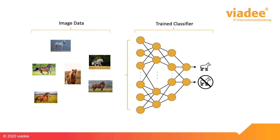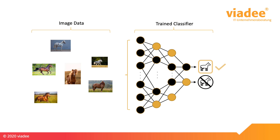To understand why we would need such a tool, imagine a machine learning classification model that was trained on image data, as shown in this slide. At the moment it doesn't really matter what type of model that is — say we have something like a neural network trained on image data about horses. That means for a given input image, the classifier can predict whether the image contains a horse or not. While this is already informative, there is nothing more the network can tell us than horse or no horse. Since the network consists of a huge number of layers and neurons, a human is not able to trace back the decision policy that the classifier follows.